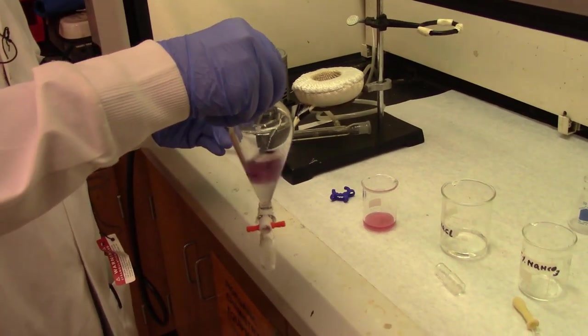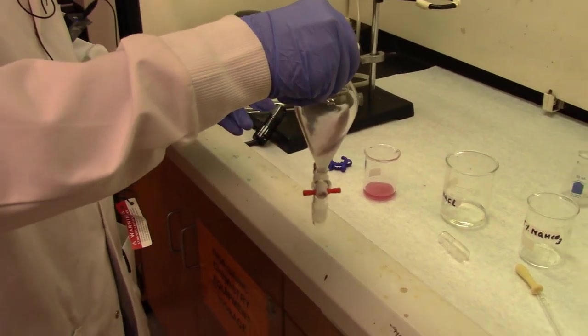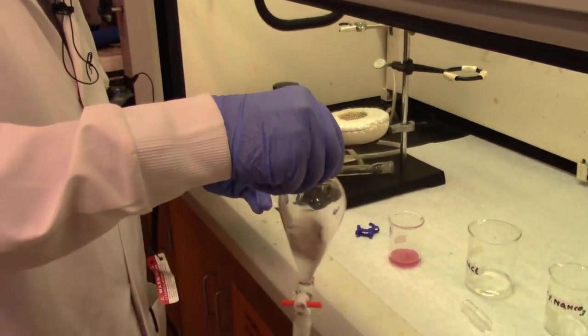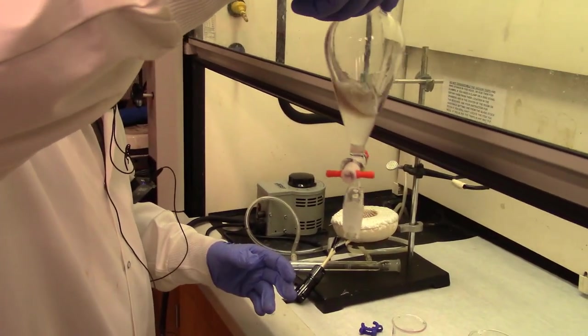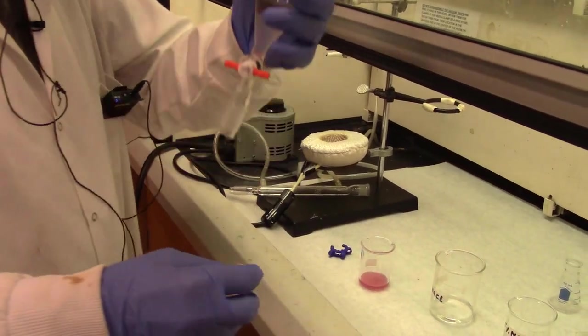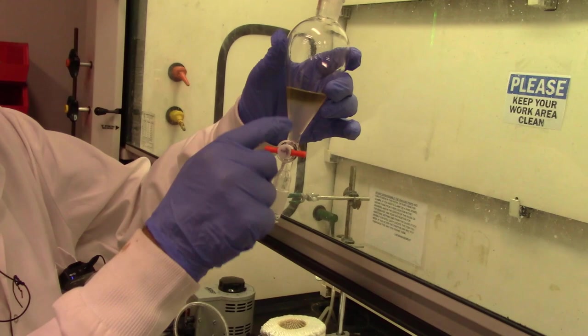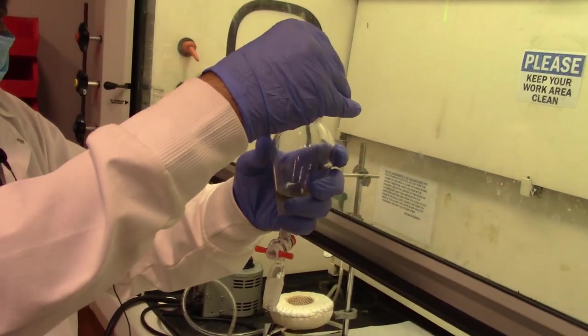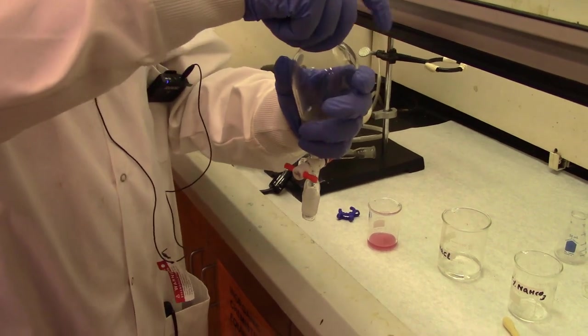You swirl it in a circular motion of the separatory funnel, and that way you can see that the color is improving. It is becoming less colored. It's become clear. It's clarifying. Now you see two layers very nicely. Again, upper layer is your desired product, which is banana oil, and the lower layer is the aqueous layer.